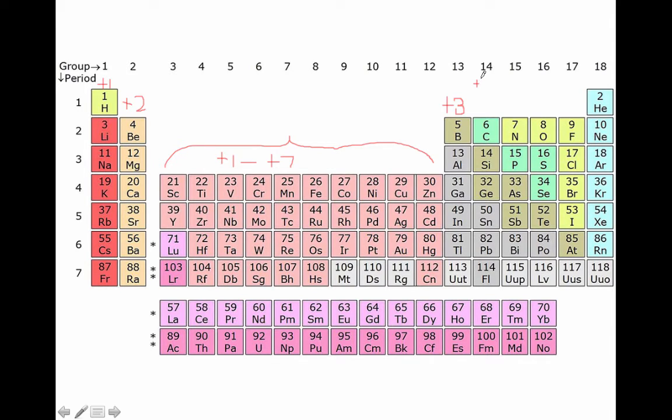So they can form a plus two cation or a plus four cation. And we're going to address those when we talk about type two ionic compounds. Now these elements right here in column 14 have four valence electrons. Four is halfway to eight. And we know that all elements want to form that octet. They want to be isoelectronic with the noble gases.